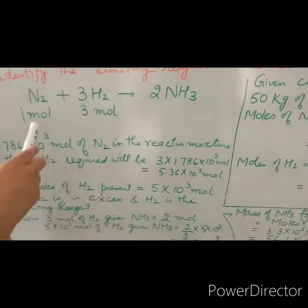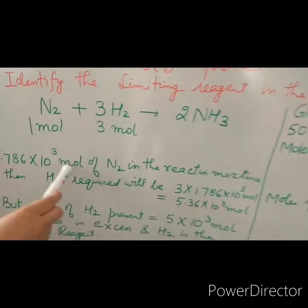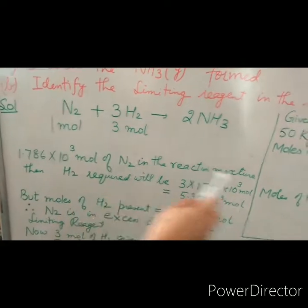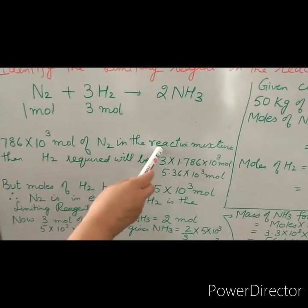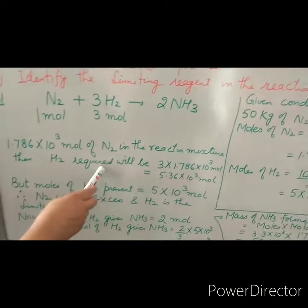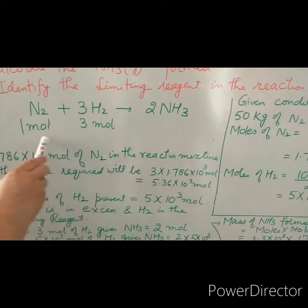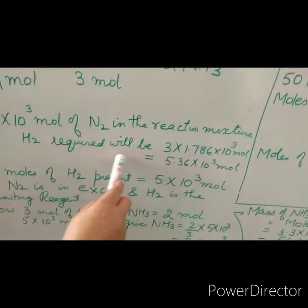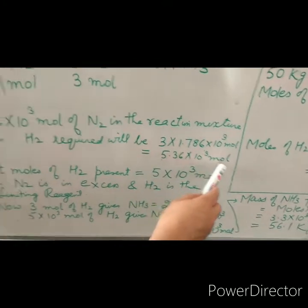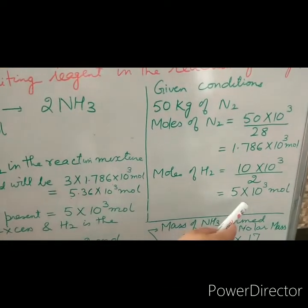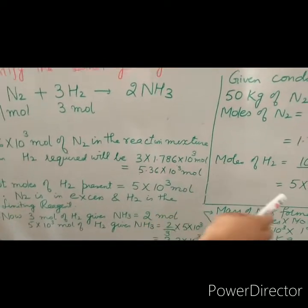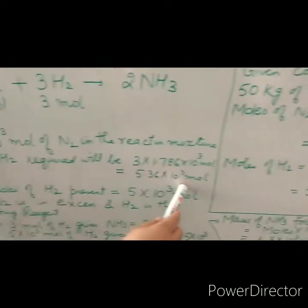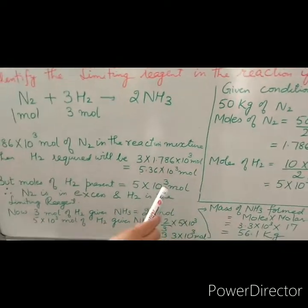If we have 1.786 × 10³ moles of nitrogen in the reaction mixture, then hydrogen required will be 3 times this value, as the balanced chemical equation states. So the amount of hydrogen required will be 5.36 × 10³ moles. But 10 kg of hydrogen provides only 5 × 10³ moles. Since available moles of hydrogen are less than required, hydrogen is the limiting reagent.